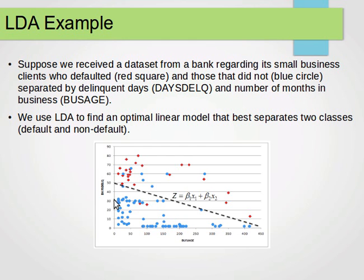These are separated by delinquent days and the number of months in business. So we have two variables, two features or predictors, which are delinquent days and BUSAGE. We want to use LDA to find an optimal linear model that best separates the two classes, default and non-default.